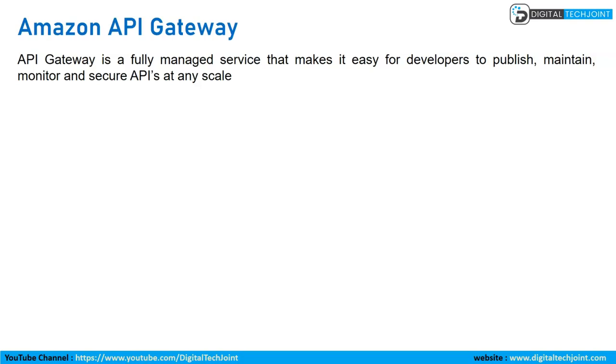Amazon API Gateway is a fully managed service that makes it easy for developers to publish, maintain, monitor, and secure APIs at any scale.